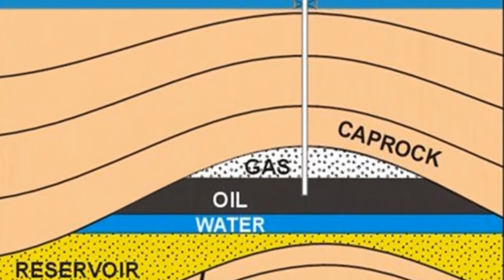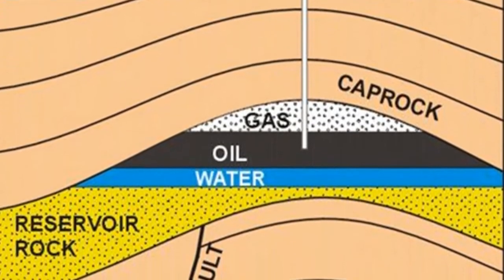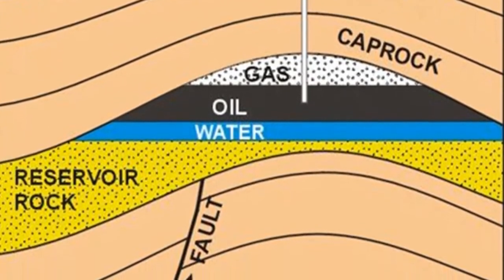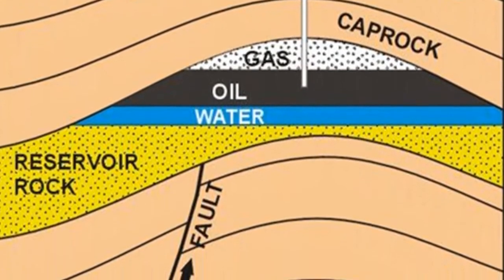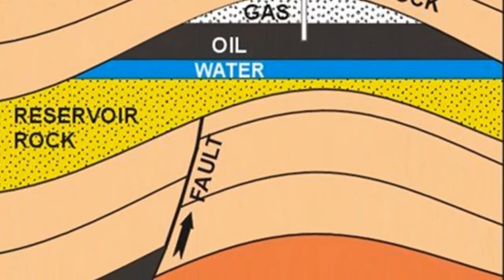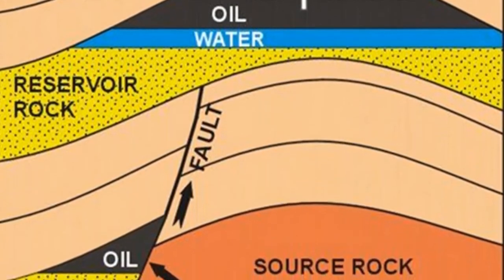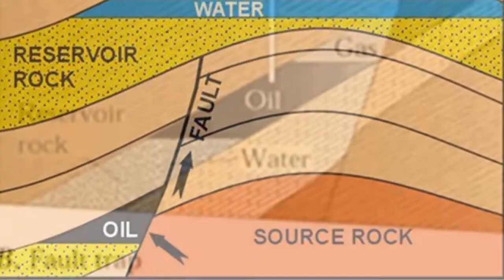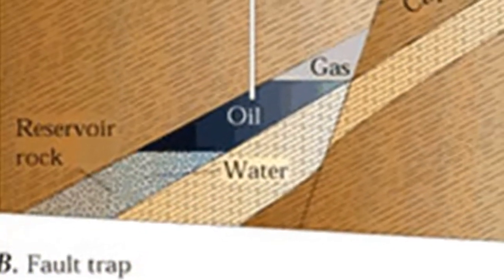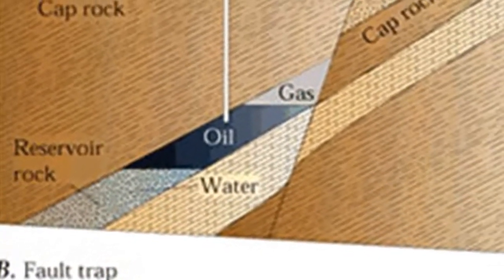Fault traps form when strata are displaced in such a manner as to bring a dipping reservoir rock into position opposite an impermeable bed. In this case, the upward migration of the oil and gas is halted where it encounters the fault.